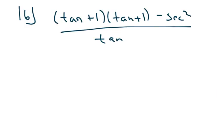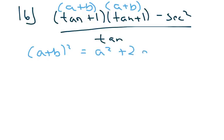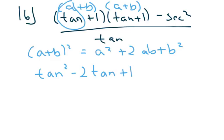Problem 16. This has the form of (a+b) times (a+b), or this is (a+b) squared, which equals a² + 2ab + b². So my a is tan. So I have tan² + 2tan, because b is 1, so it's just 1 times tan plus 1 minus sec² all over tan.